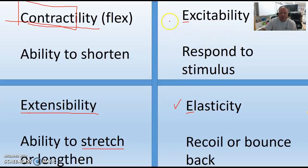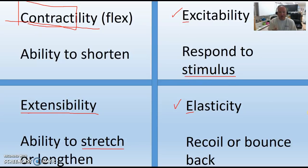Excitability is next. When we discuss the nervous system, we'll talk about nerve impulses — essentially a fancy electric shock. Muscles have to respond to a stimulus. If you take a cattle prod and zap fat tissue, it won't respond, but muscles will. That's why tasers work — your muscles will be excitable and you will feel it.